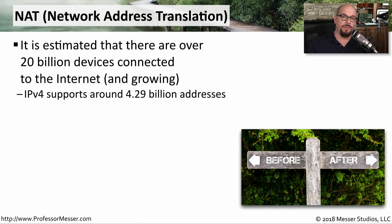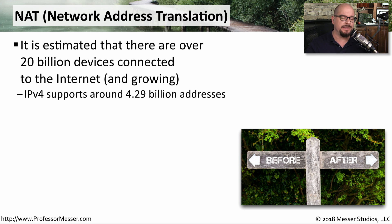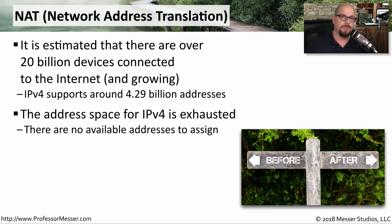If we look at IPv4 and the number of bits available in an IP address, we know that we have a maximum of about 4.29 billion possible addresses. But it's been estimated that there are over 20 billion devices connected to the internet, and that number is increasing over time. So how are we able to communicate between all of these devices if there are only 4.29 billion addresses available? Adding to this complication is that we have exhausted the IPv4 address space — there are no more IPv4 network addresses that can be assigned to different organizations.